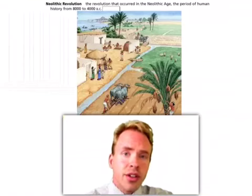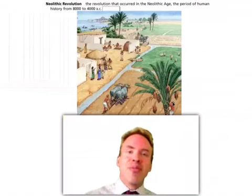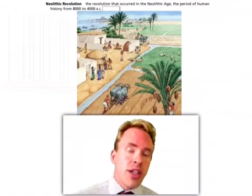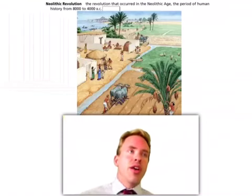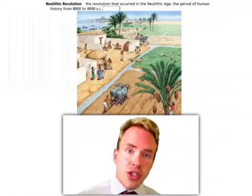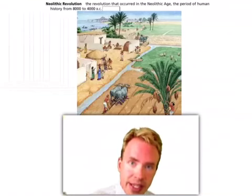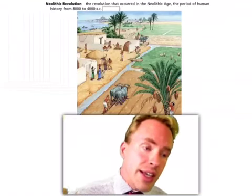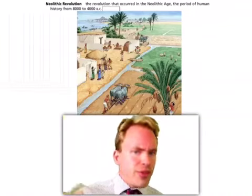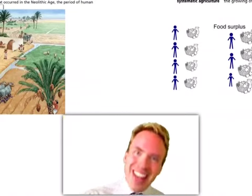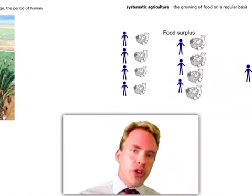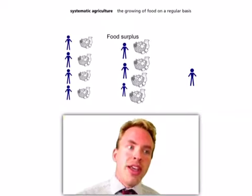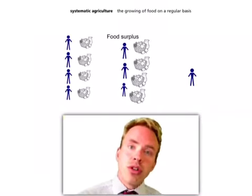People discover how to farm. It doesn't seem like the biggest deal in the world, but it really is. When people have to hunt and gather their food, there doesn't end up being a lot extra. You hunt the food, and then you and the tribe eat it. You gather the berries and the food that you can find. When you farm — when you plant the seeds and grow the food yourself — the big difference, and it ends up being a fundamental transformation, is that you end up with a food surplus.